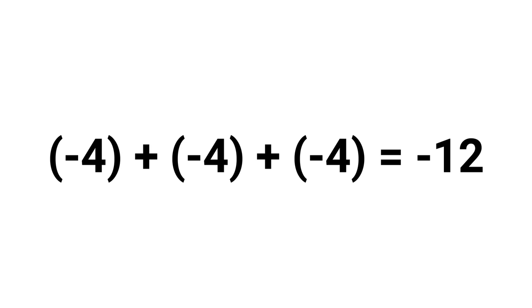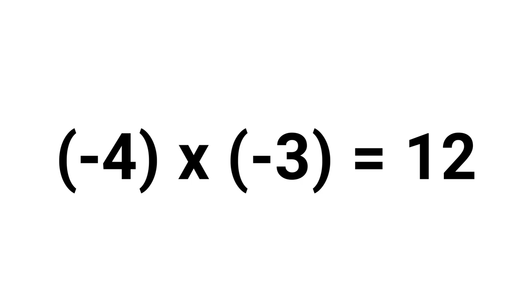But what about this third one? Minus 4 multiply by minus 3 equals 12. Minus 4 is the amount, and minus 3 is the number of times to be added. But the question is, how can number of times be negative? It is impossible.